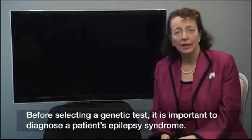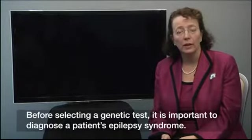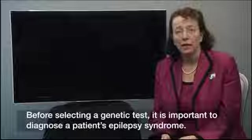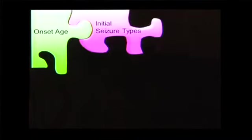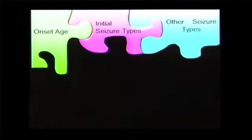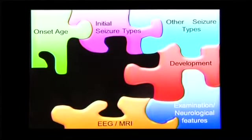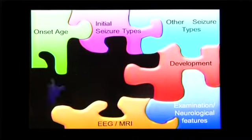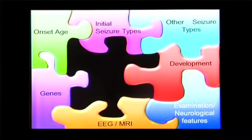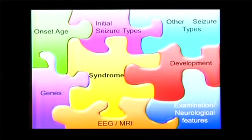Before selecting a genetic test, it is important to diagnose a patient's epilepsy syndrome. This is like putting together the pieces of a puzzle. One needs to consider the age of onset of a child and the initial seizure type, followed by the later seizure types that emerge, the developmental course of a child, any associated neurological abnormalities and other examination features, EEG and MRI findings, and finally, where known, the genes. And all of these together make up an epilepsy syndrome diagnosis.